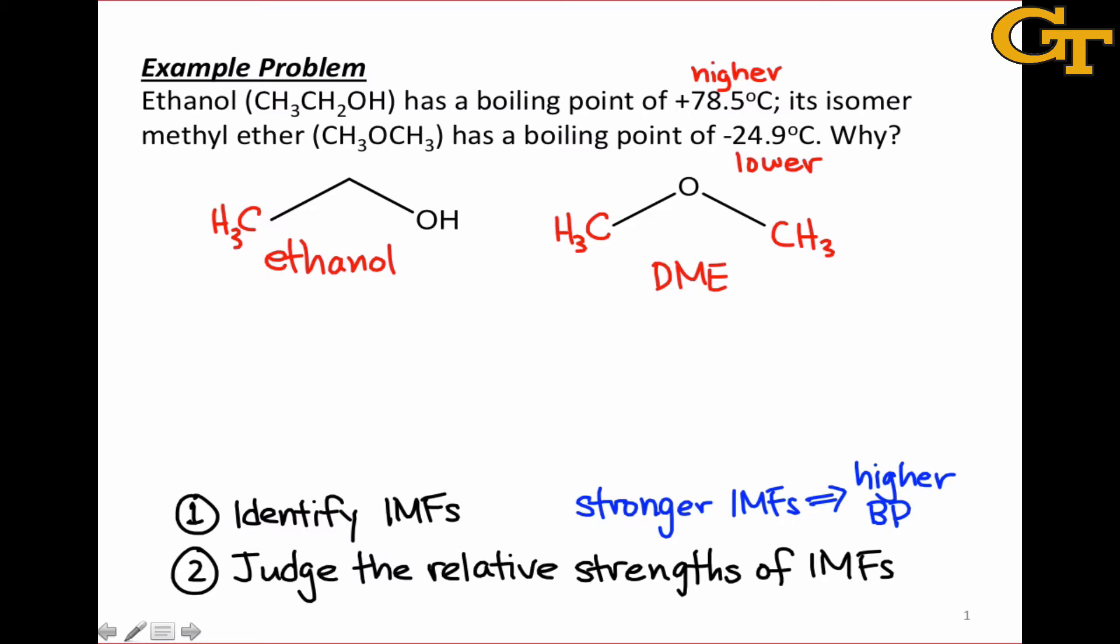Stronger intermolecular forces lead to a higher boiling point. This is the basic argument for why ethanol has a higher boiling point than dimethyl ether. The conclusion is that the intermolecular forces in ethanol are stronger than the intermolecular forces in dimethyl ether. But this isn't quite a satisfying explanation. We want to point structurally to the exact forces that cause ethanol to have a higher boiling point.